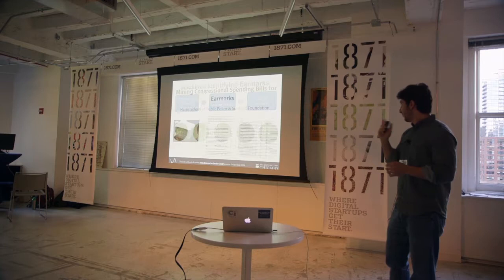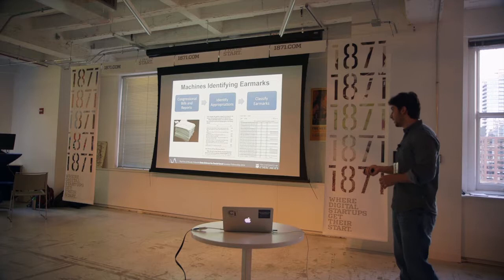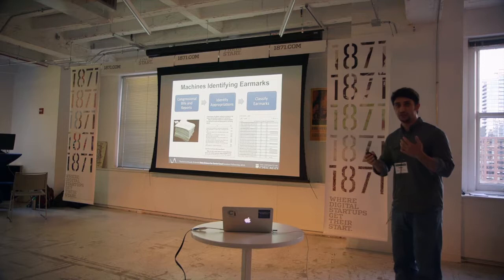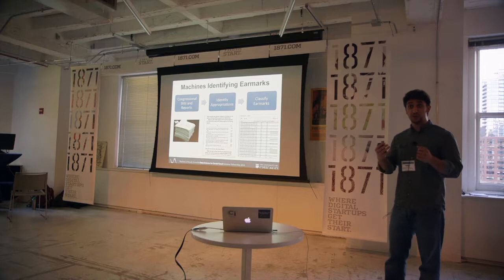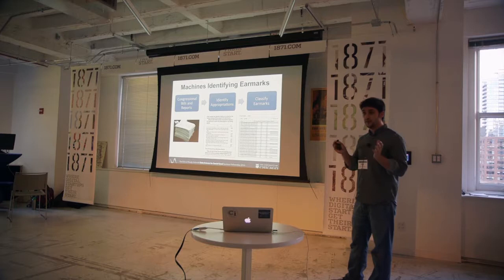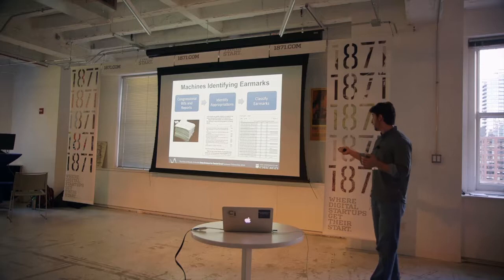These congressional bills and reports are massive — thousands of pages filled with text. Within this text there are appropriations that can appear either inside tables or within free text. What we ended up doing is taking these congressional bills and reports, parsing all the tables that identify spending, and then classifying whether it is earmark spending or regular spending.